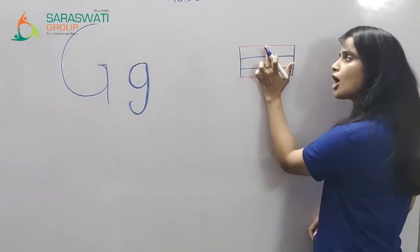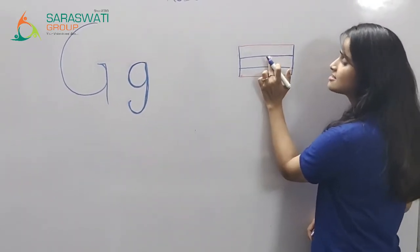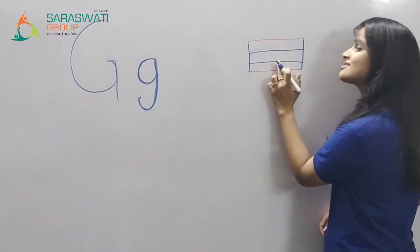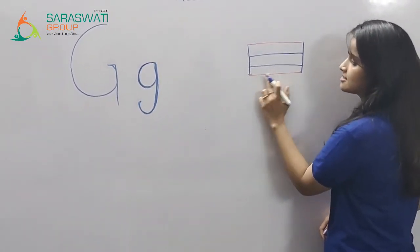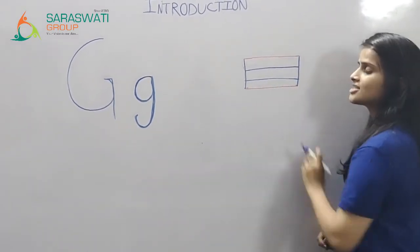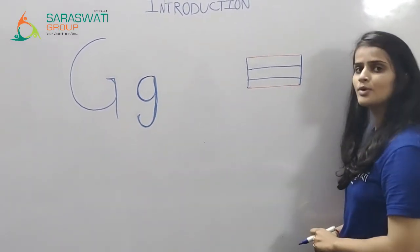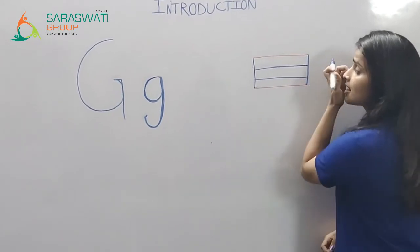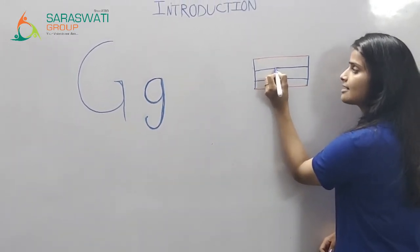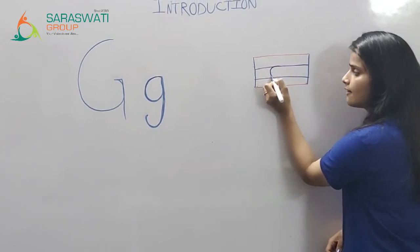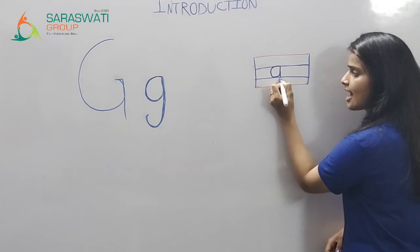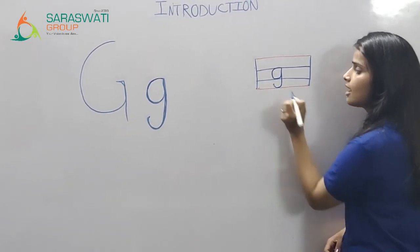This is the top line. This is the first base line. Which line is this? This is the second base line. And this is the bottom line. Lowercase G starts from the first base line. Come, go up, standing line and small come.